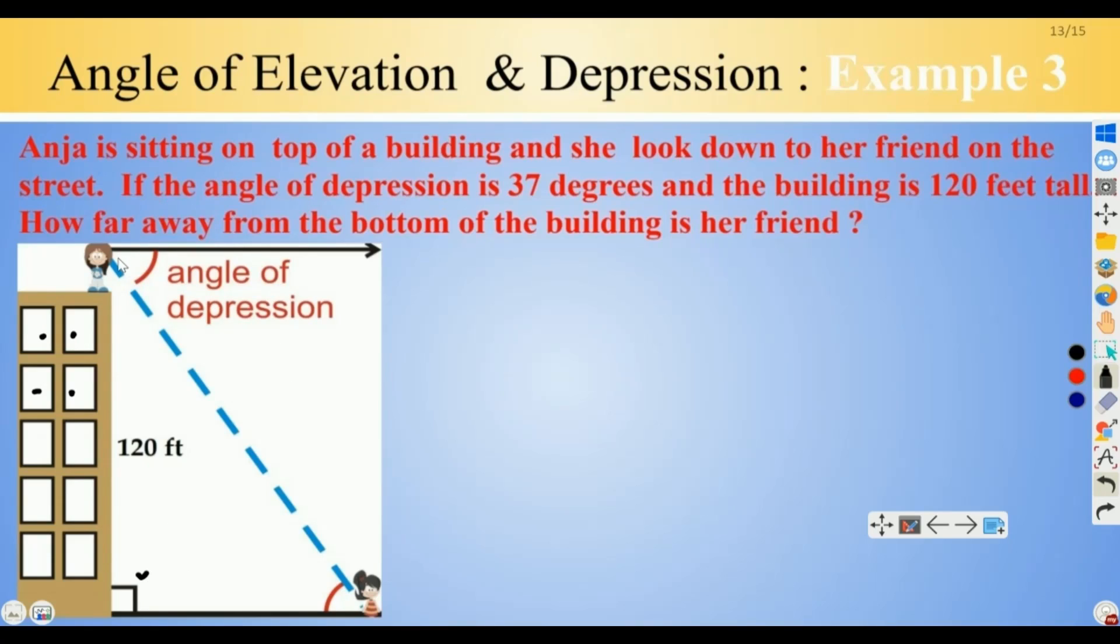When she looked down at her friend, she is looking at an angle of depression. But remember, what is an angle of depression? It means that she is looking down from the horizontal.